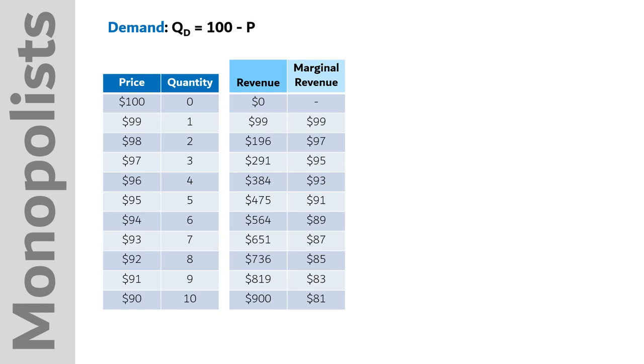Marginal revenue is the additional revenue we get from selling one more unit. When we produce and sell one unit, we increase our revenue by $99. That is the marginal revenue. If we produce two units, our revenue rises from $99 to $196, which is a difference of $97.